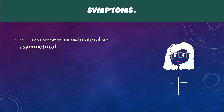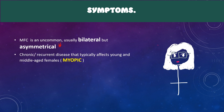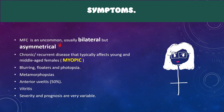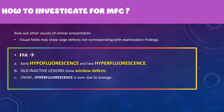Multifocal choroiditis is an uncommon but bilateral condition, often presenting in both eyes with asymmetrical involvement — this asymmetrical presentation is a very important point. It is a chronic recurrent disease typically affecting young and middle-aged females, mostly with associated myopia. Patients present with blurring, floaters, photopsias, metamorphopsias, anterior uveitis, and vitritis. The severity and prognosis can be quite variable.